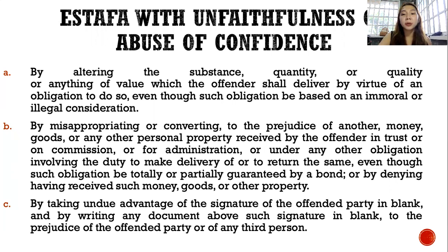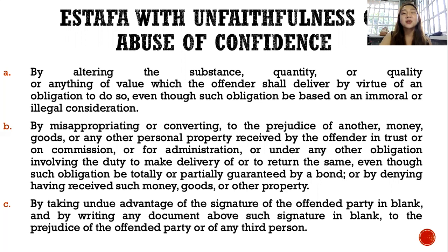The second punishable act is by misappropriating or converting to the prejudice of another any money, goods, or other personal property received by the offender in trust, on commission, or for administration, or under any obligation involving the duty to make delivery of or to return the same, even though such obligation be totally or partially guaranteed by a bond, or by denying having received such money, goods, or property.